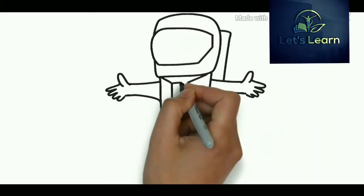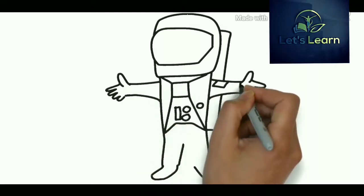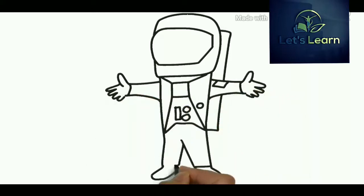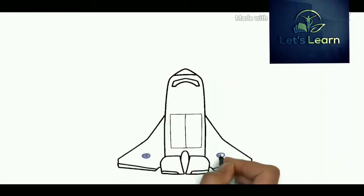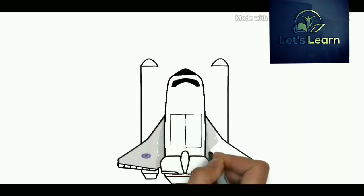Aeronautical engineering was the original term for this field. As the technology advanced to include craft operating in outer space, the broader term called aerospace engineering has largely replaced it in common usage. Aerospace engineering, particularly the astronautics branch, is often referred to as rocket science.